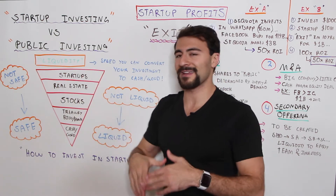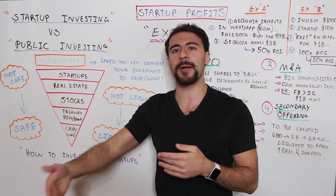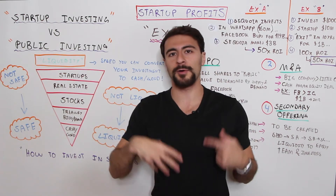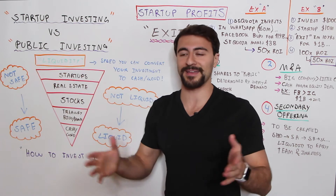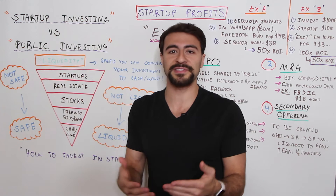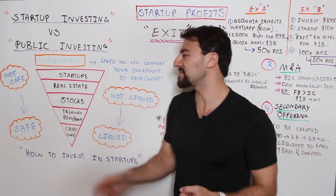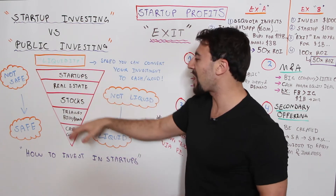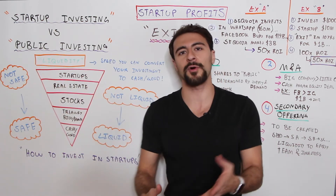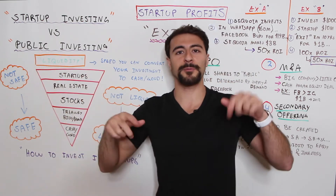If you own a house or an investment property, you can theoretically sell it for cash, but the speed at which to do so is not as quick as a stock. If you own a share of stock, you can pretty much sell out of your shares between trading hours — maybe you made a loss, but you can cash out a lot easier than in real estate. As you move down further, you have treasury bills and bonds, and then cash and gold as the safest and most liquid assets.